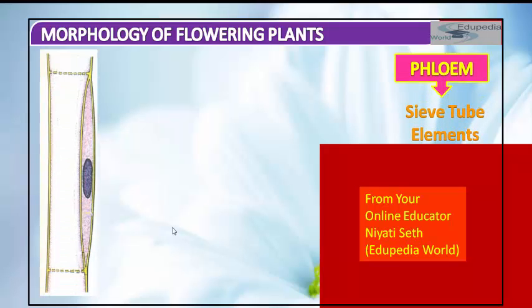Sieve tube elements are long, tube-like structures arranged longitudinally and are associated with companion cells. Their end walls are perforated in a sieve-like manner to form the sieve plate. A mature sieve element possesses peripheral cytoplasm and a large vacuole, but it lacks a nucleus.